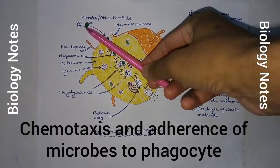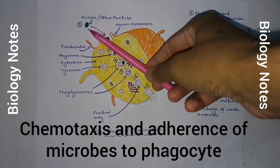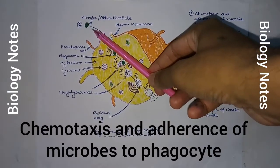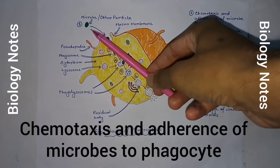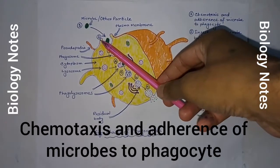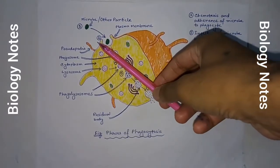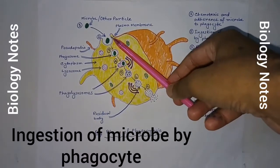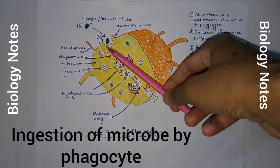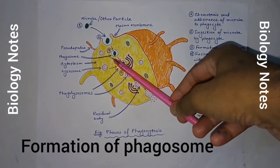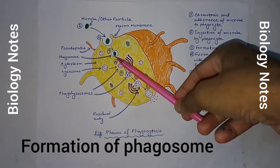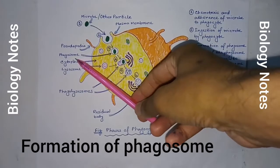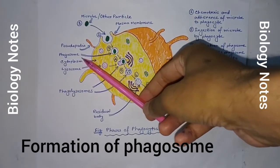In the first step, macrophages move to the pathogen by chemotaxis, and the pathogen such as microbes attach to the membrane receptor of macrophages. In the second step, the pseudopodia of the macrophage starts to engulf the pathogen. In the third step, the macrophage takes the microbe into its cell by making an endocytic vesicle called a phagosome.